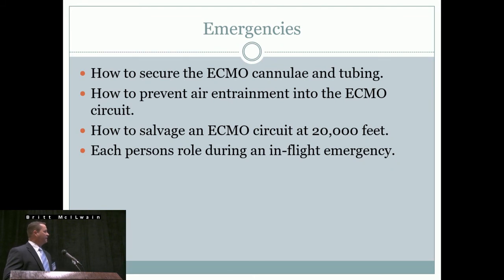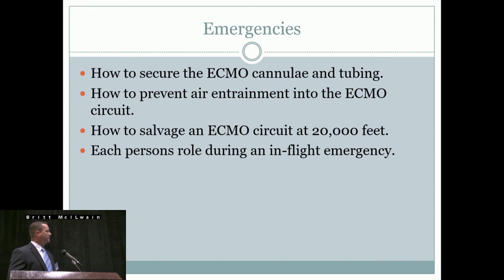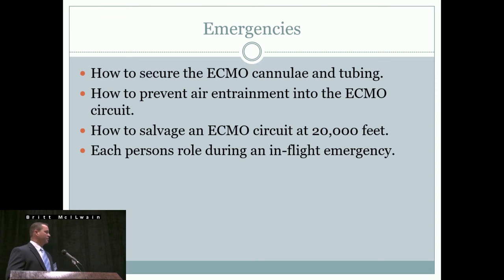For in-flight emergencies, you must know how to secure ECMO cannulas and tubing. The best approach is to prepare the circuit and cannulas so you don't have air entrainment. We use plunger caps or one-way valves on all stopcocks to reduce the risk of air entrainment. You need protocols for how to salvage a circuit at 20,000 feet, where everybody will be positioned, who will hand crank, who will work on the circuit, and each person's defined role.